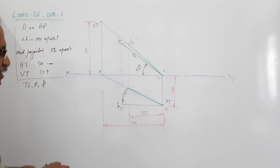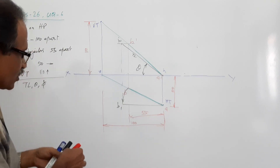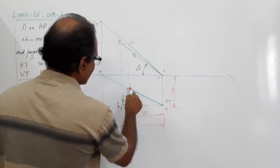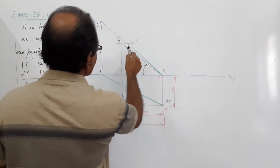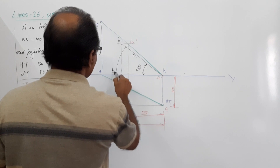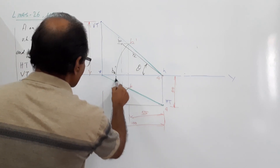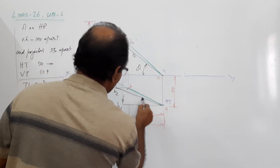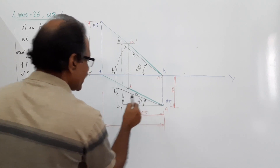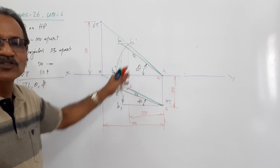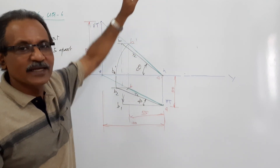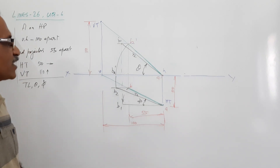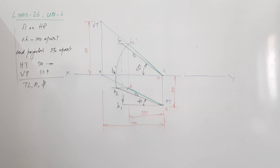Similarly, make the elevation parallel to XY to find phi. Using the elevation A dash–B dash, rotate to get B2 dash, then project down to get B2 — giving the true length and phi. I advise going for trapezoidal construction on both plan and elevation, though large distances may push the construction outside the sheet, which is why line rotation is preferred here. So true length, theta, and phi are all found.